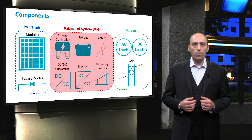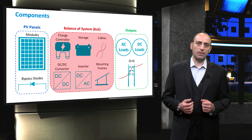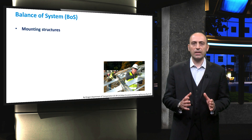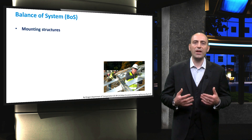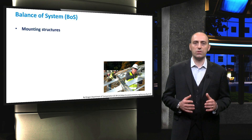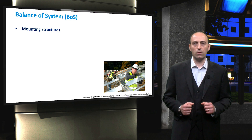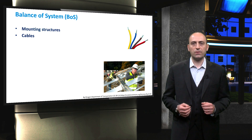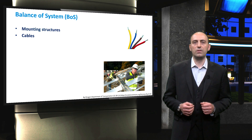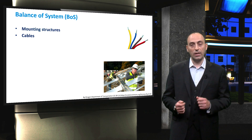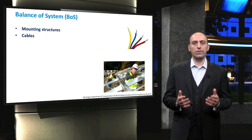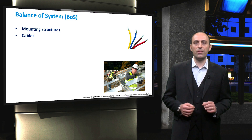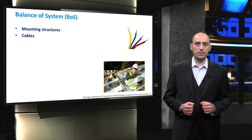What are the components making up the balance of system? Here we have the mounting structure that mechanically fixes the modules and arranges them towards the sun with the optimal tilt angle. Then there are cables that are used to connect the different components of the PV system to each other and to the electric load. It is important to choose cables of sufficient thickness in order to minimize resistive losses.